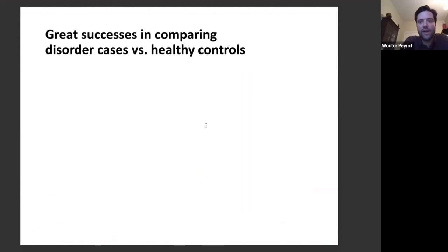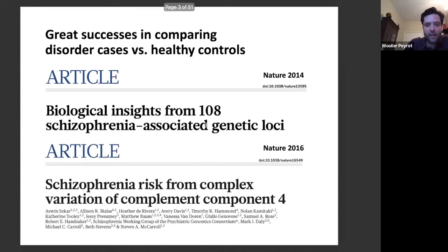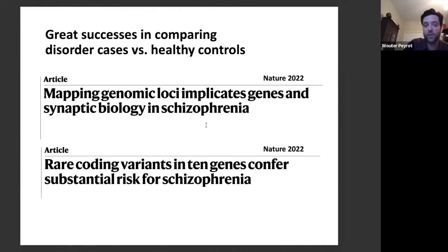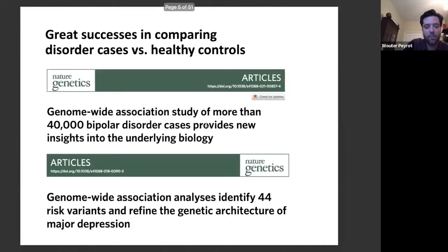Genetic research has had great successes comparing disorder cases to healthy controls — landmark papers in Nature on schizophrenia with biological insights, as well as papers in Nature Genetics, and similarly for bipolar disorder and major depressive disorder. The success in genetic research comparing cases to healthy controls has been enormous over the last few years.